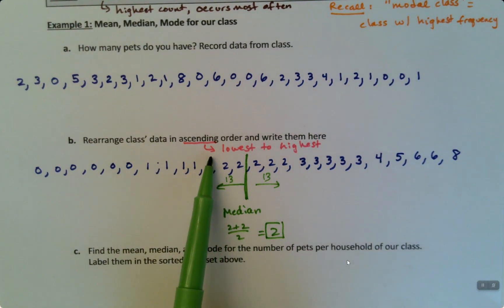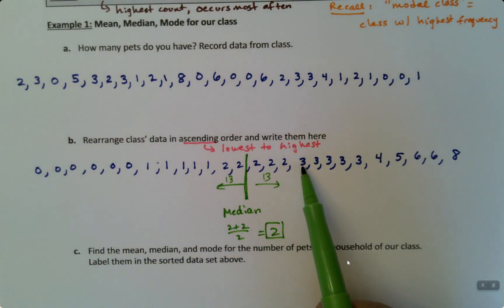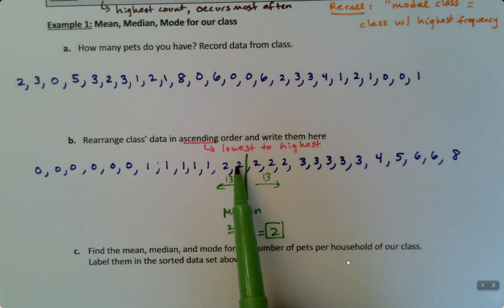Now, just so you can see, if it had been here, if it had been between the one and the two, that would have been 1.5, because 1.5 is halfway between one and two. Similarly, if it had been here between two and three, that would have been 2.5. But it just didn't work out that way. It's between a two and a two. Therefore, the median is two.